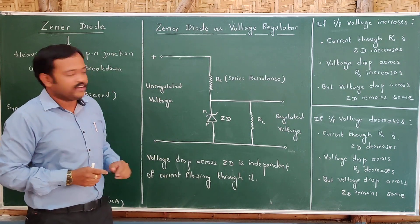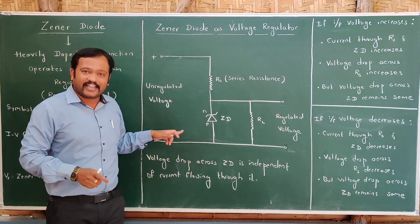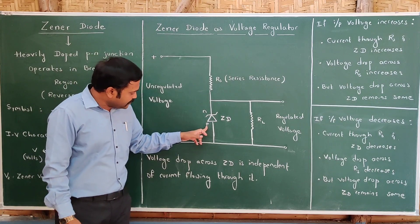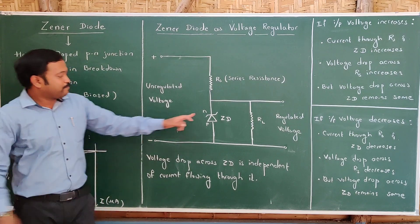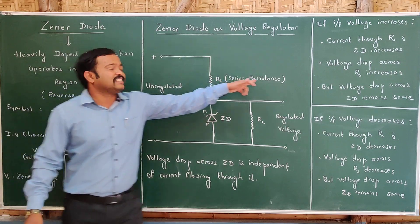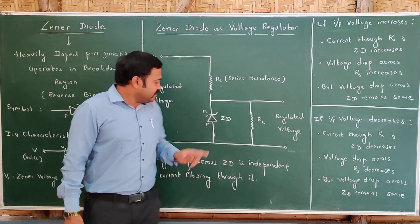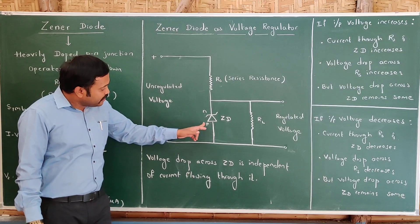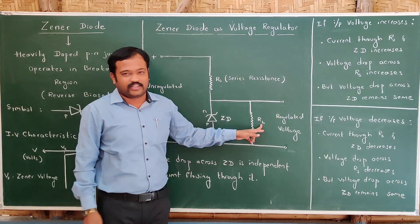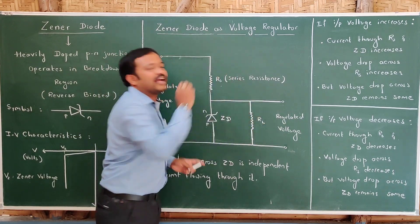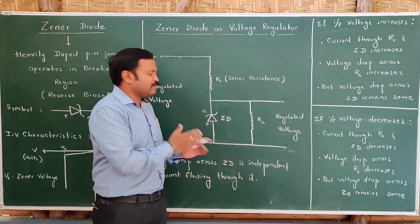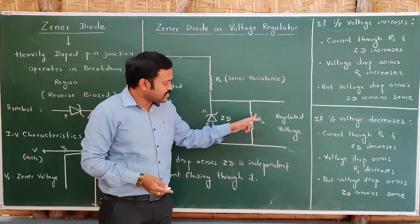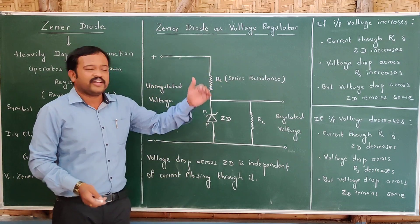Let us understand the circuit behind this. The unregulated voltage is connected to the Zener diode, and we know that the Zener diode should always be connected in reverse bias — the P side is connected to negative and the N side is connected to positive. Along with this, a series resistance RS is connected. The device which you want to protect — for example a TV or refrigerator — is the load resistance RL. These two cases help us understand how regulated voltage is obtained.